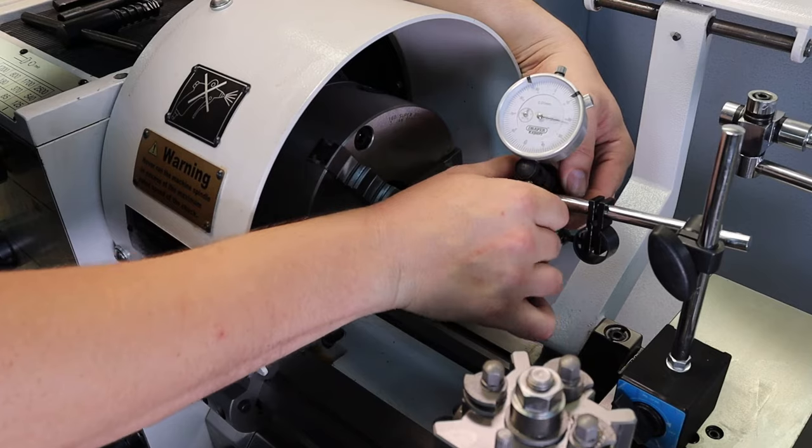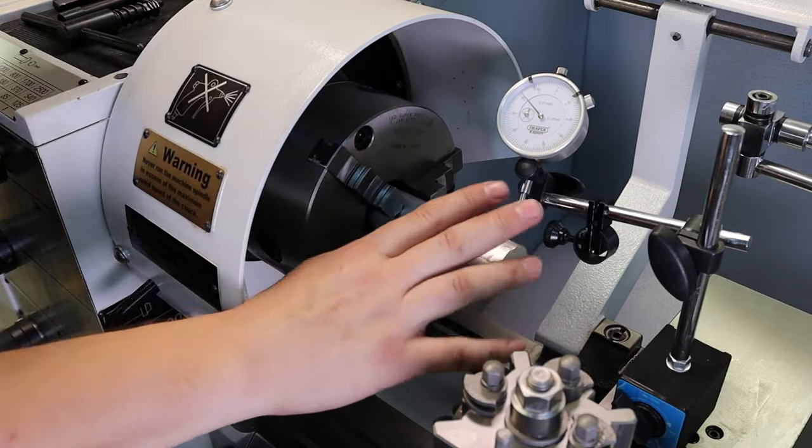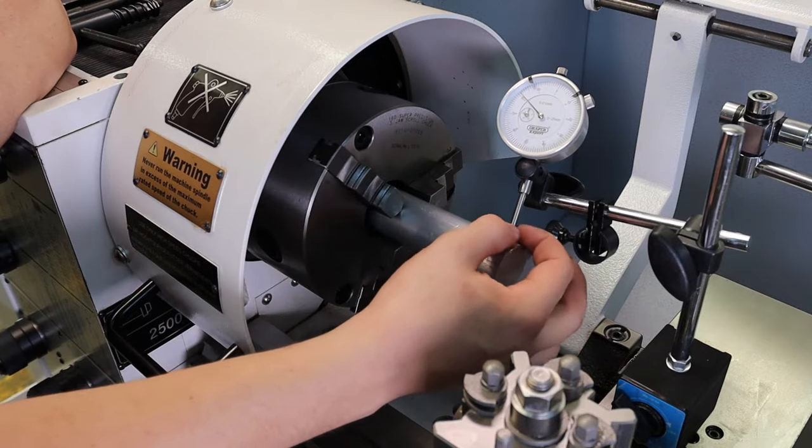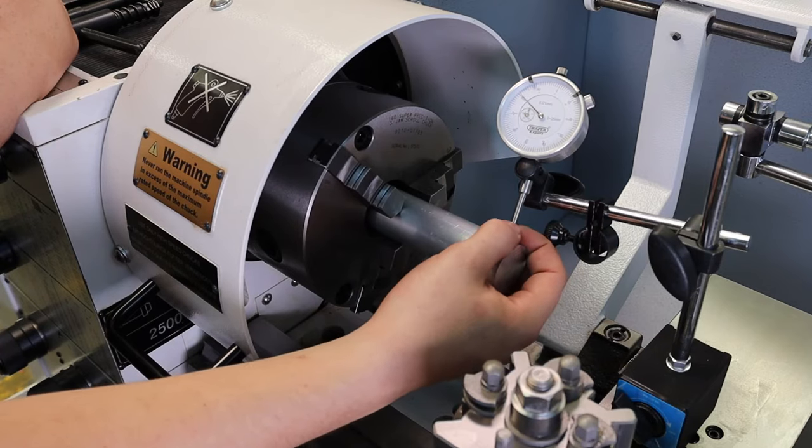I'm going to try and clamp it back up. Now be careful with these gauges. You don't want to put too much pressure on them and you want to ensure that at no point do they get forced. You want to be able to move freely forwards and backwards.